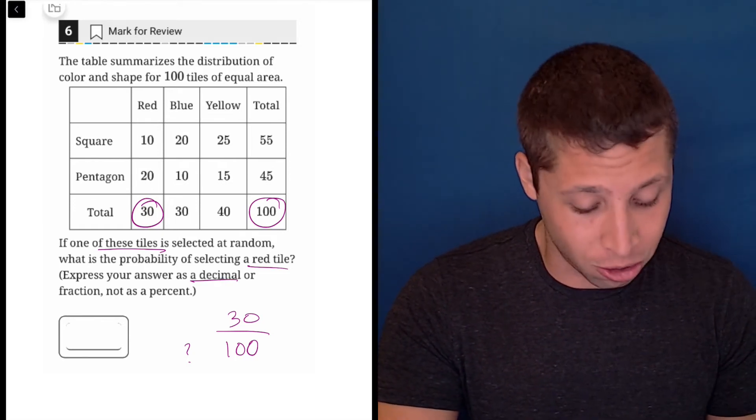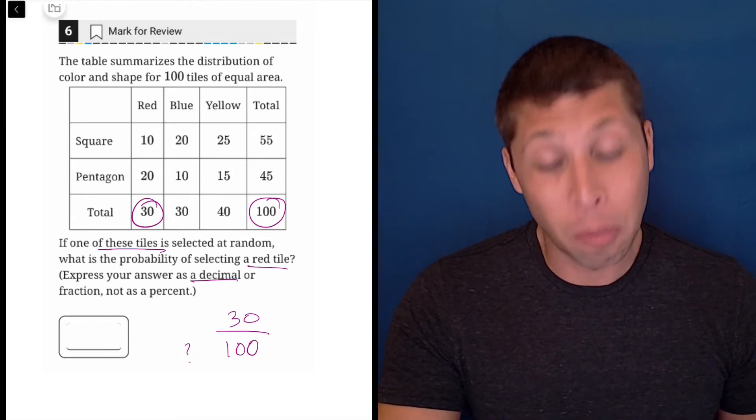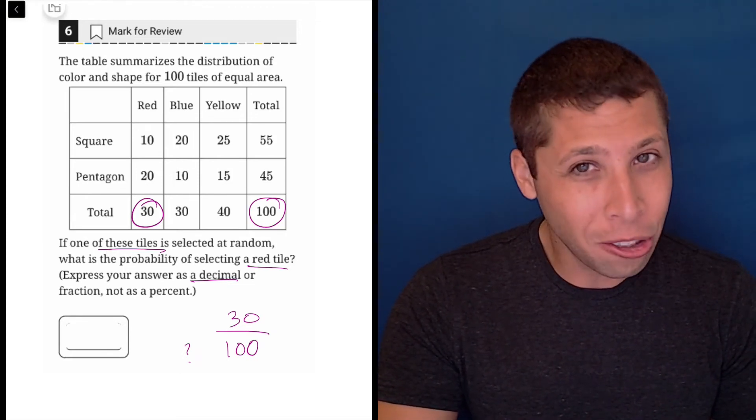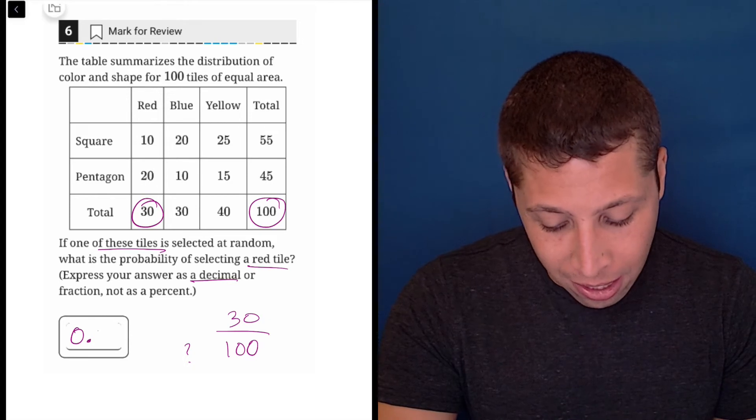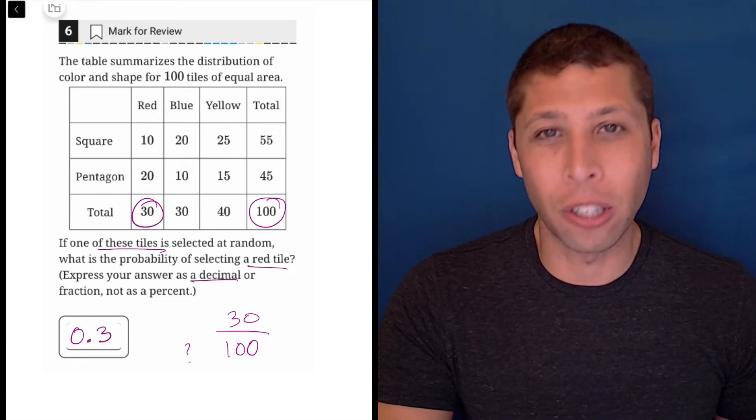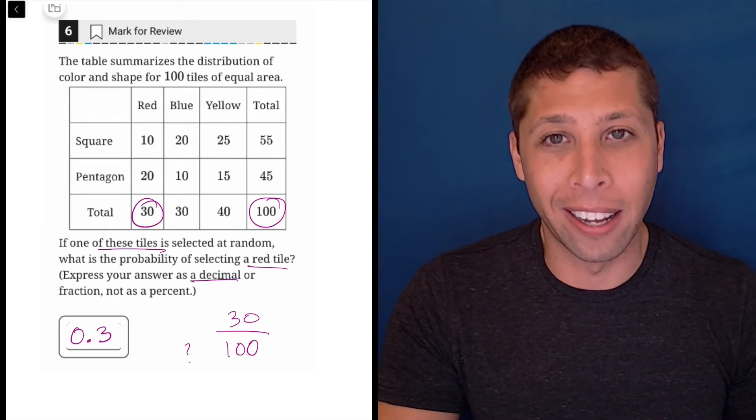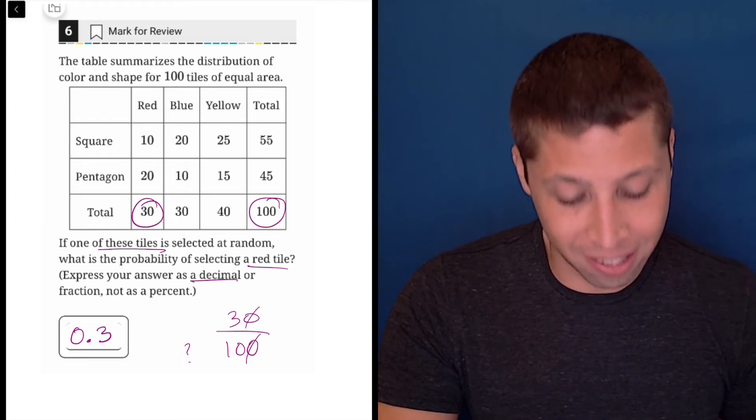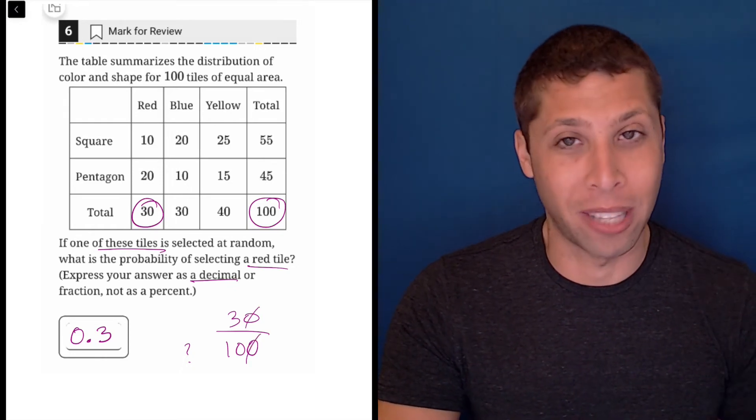If you have your calculator, feel free to just do 30 divided by 100, but to be quite honest, you really should know that 30 divided by 100 is 0.3. Those are the kinds of decimal conversions you need to have memorized. It's just cross out the zeros, and then it's 3 tenths.